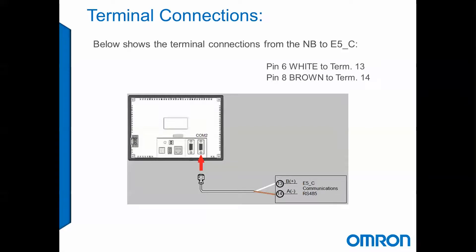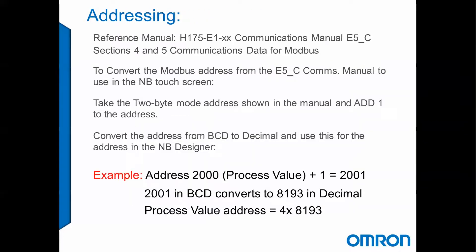We're going to be using COM2 on the Touchscreen, so we're going to attach the DB9 to COM2. On the other end, pin 6, which was our white wire, is going to go to terminal 13 on the controller. Pin 8, which is the brown wire, is going to connect to terminal 14.